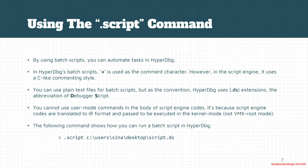The difference between S script files and batch files is that S script codes are translated to a standard IR format, and finally passed to be executed in kernel mode. One thing to consider is that these S scripts and batch scripts are all parsed in the user mode part of the debugger.